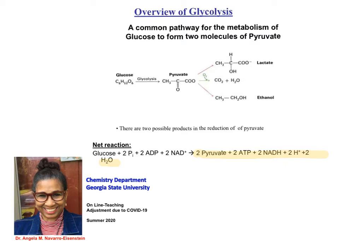Depending on the conditions, the fate of pyruvate could be a reduction in anaerobic conditions — for example in yeast to produce ethanol and carbon dioxide, or a reduction when we are doing extreme exercise to produce lactate. In the abundance of oxygen, pyruvate will undergo an oxidative decarboxylation to produce a 2-carbon coenzyme that can enter the citric acid cycle.